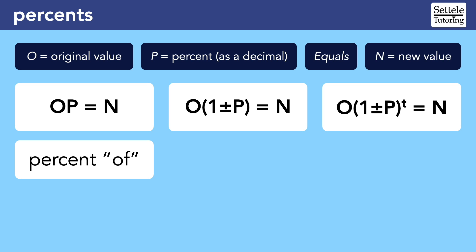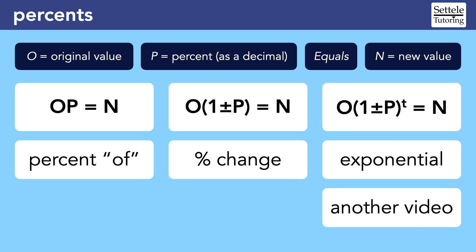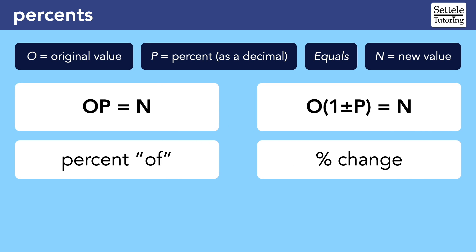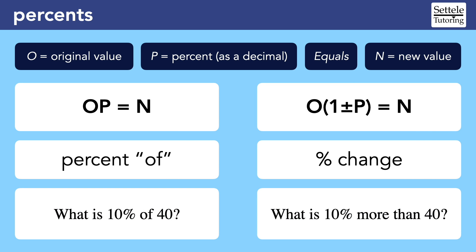Most people already know a version of the basic OP formula, but we can very easily change the basic formula to handle situations where we have to increase or decrease a value by a percentage. The 1 plus or minus P in the middle formula accounts for the percent change. The final formula is actually for exponential equations, where we want to take a percentage over time. I'll talk more about this version of the formula in a separate lesson. For now, let's focus on the two OP formulas that we would use for a single percentage.